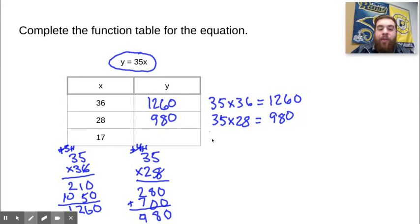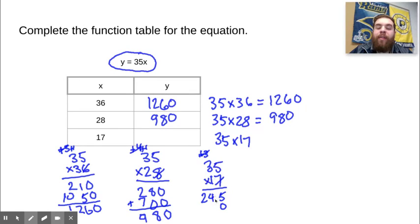Welcome back. Now we're going to do 35 times 17. 7 times 5 is 35, carry the 3. 7 times 3 is 21, plus 3 is 24. I'm going to carry down my zero because I'm multiplying by 10 instead of just 1. I'm over in the tens place. 1 times 5 is 5, 1 times 3 is 3.